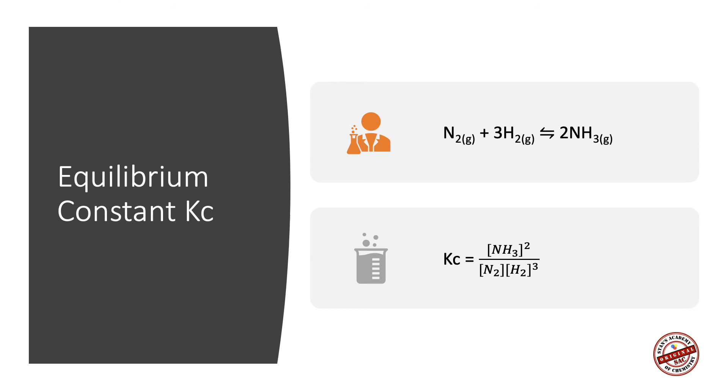Here is an example of writing the equilibrium constant Kc for N2 plus 3H2 reversibly giving you 2NH3. Kc is equal to NH3 raised to 2 divided by N2 raised to 1 divided by H2 raised to 3.